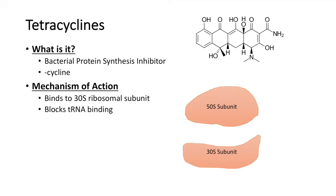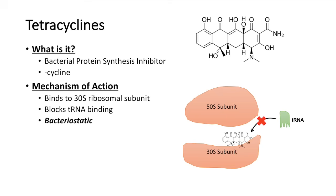Here is a little diagram of the ribosome. The tetracycline actually binds to the 30S ribosomal subunit, and this blocks tRNA from getting to the 30S ribosomal subunit to actually bring amino acids. Remember, tRNAs actually bring amino acids to the ribosome. So in blocking this process, it actually acts as a bacteriostatic agent — it actually inhibits the growth of bacteria.